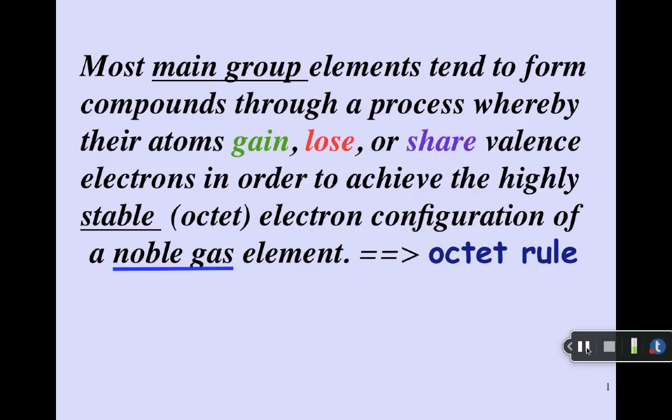All right, we need to have a conversation today a little bit further with the formation of ions from main group elements. The pattern that we're continuing to describe is what we call the octet rule, whereby most main group elements tend to form compounds through a process where their atoms will either gain, lose, or share valence electrons in order to get to a highly stable octet arrangement of a noble gas element.